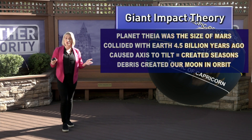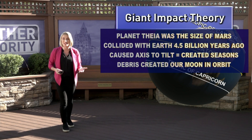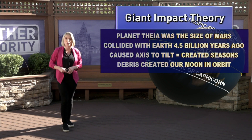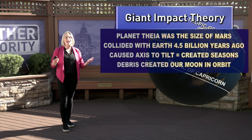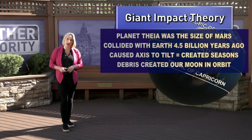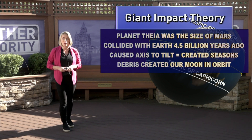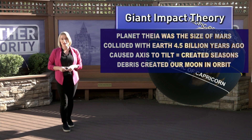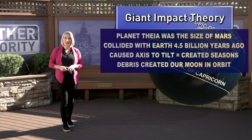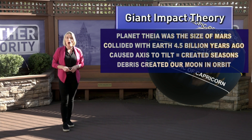The debris from this planet's impact on Earth created our Moon, which is still in orbit. This is still a theory — there is some evidence to support it, but not a confirmed fact that this was the exact reason why our seasons were created, but it's still our best explanation for the reasoning behind it.